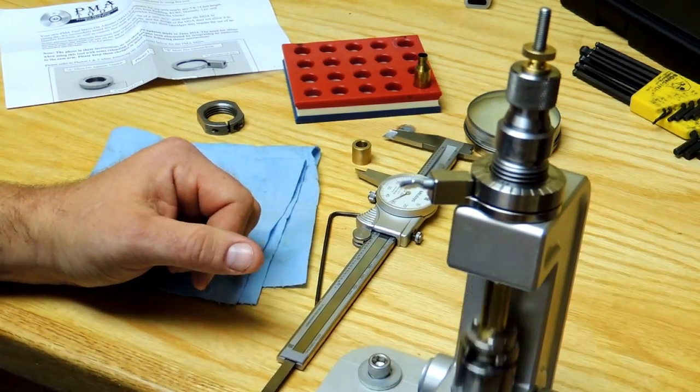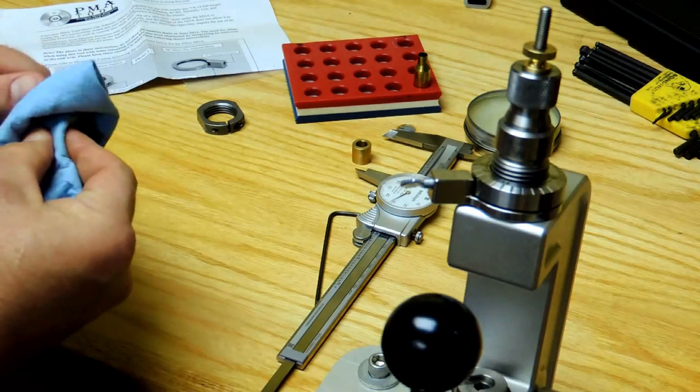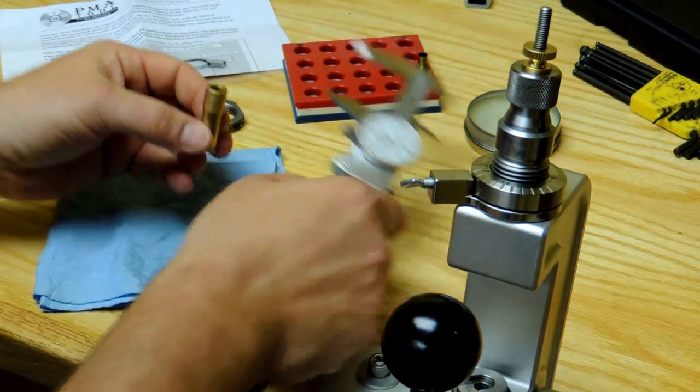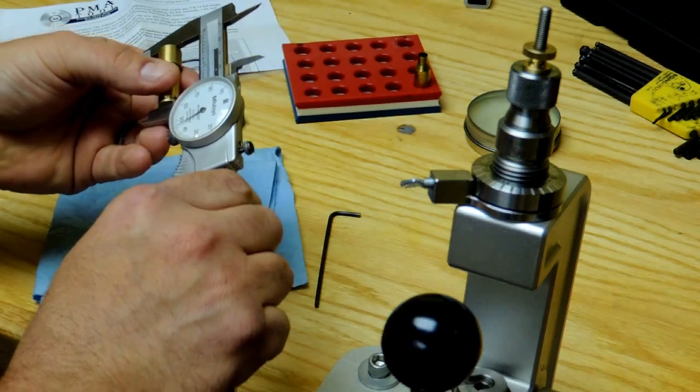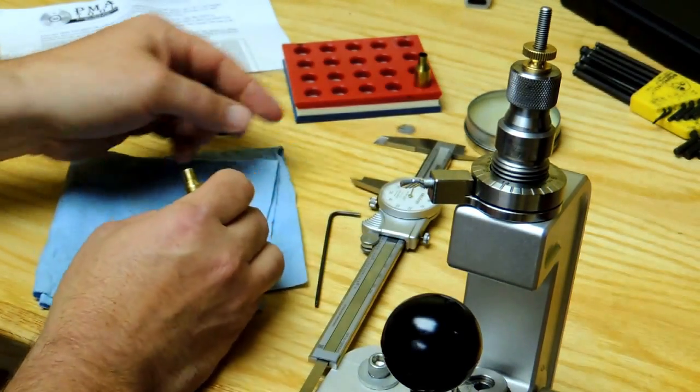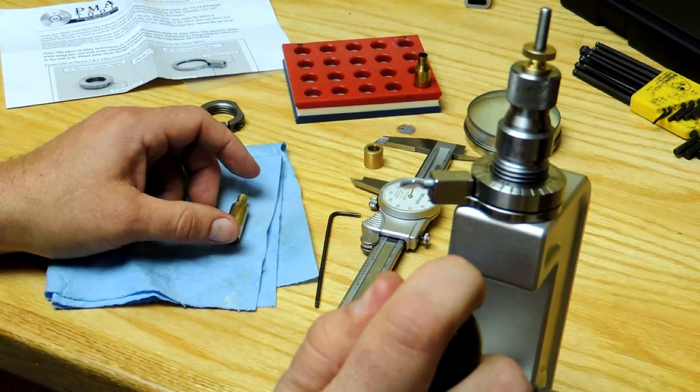Size this piece of brass, and re-measure. Based on that measurement, we now know how much we need to adjust the die.